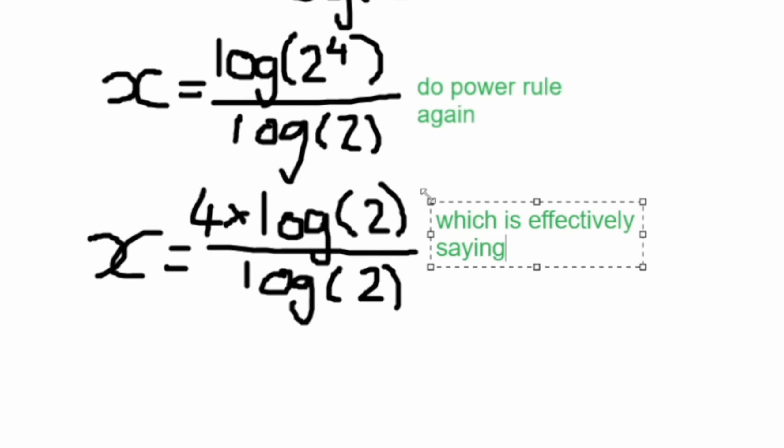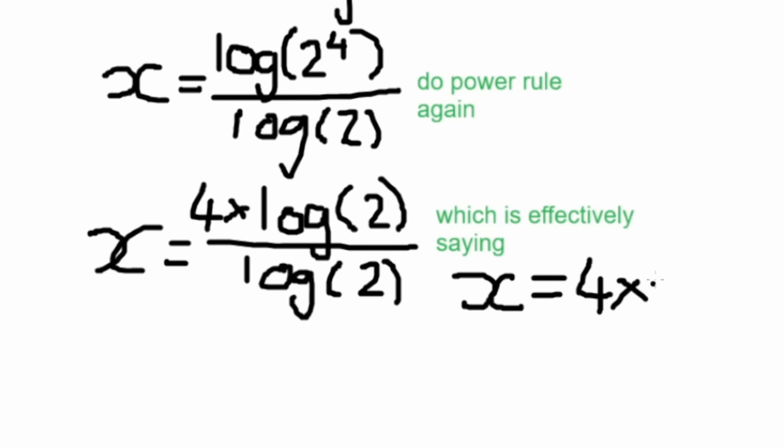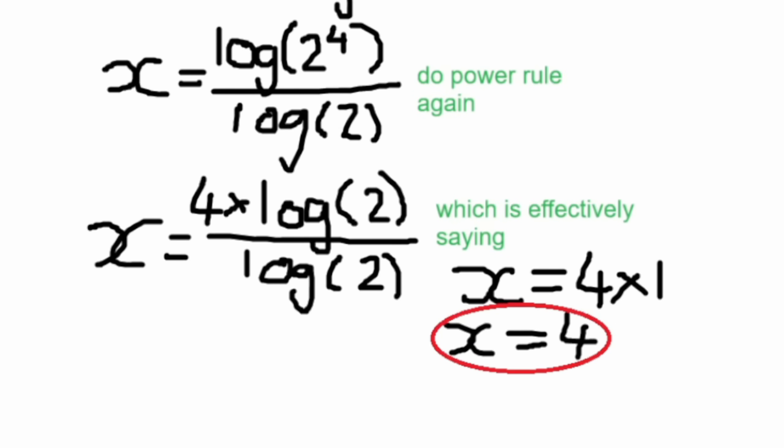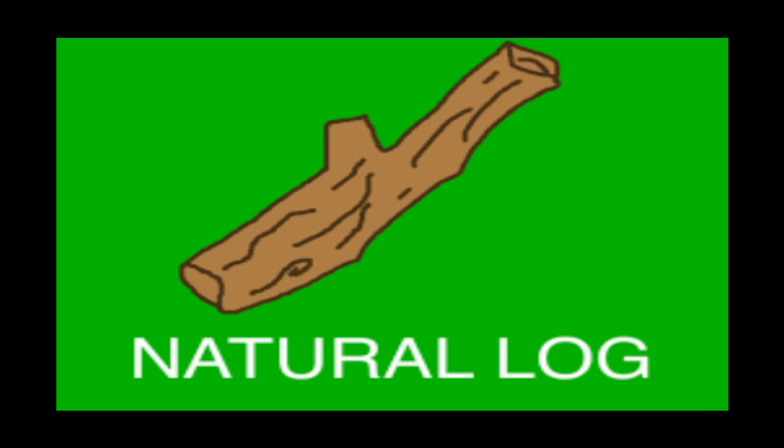Anything divided by itself that is non-zero will equal 1, so this is saying x equals 4 times 1 — in other words, x is 4. But what about natural logs?